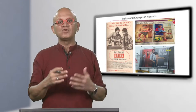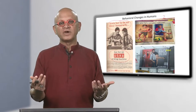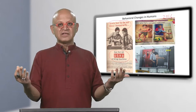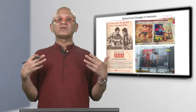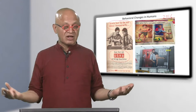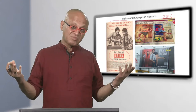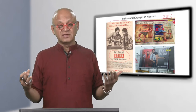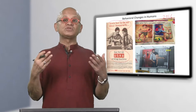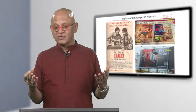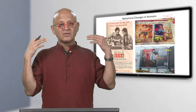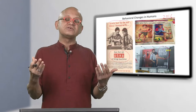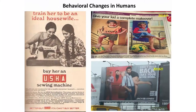The best example of internalized norms is traffic lights in countries like the US or Europe - when there is a red light, you stop even in the middle of the night with nobody around and no cameras. You wait for it to change because that is the rule - that is called internalizing the norm. There are changes that happen over time - for example, an old ad said train her to be an ideal housewife for the Usha sewing machine, which would be considered completely inappropriate at this point.